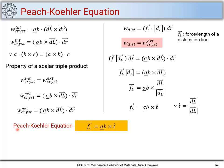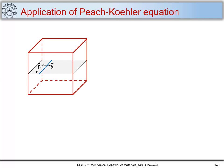Let's understand the Peach-Koehler equation by taking examples. Consider a crystal with an edge dislocation where the tangent vector and Burgers vector are marked. The Burgers vector is perpendicular to the tangent vector. Mark coordinate axes x1, x2, x3. The stresses acting on this crystal include: sigma₁₂ acting on plane 1 along x2 direction, sigma₁₃ on plane 1 along x3, and sigma₂₁ on plane 2 along x1 direction.